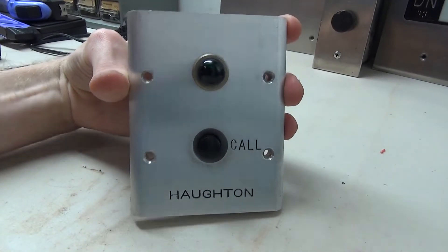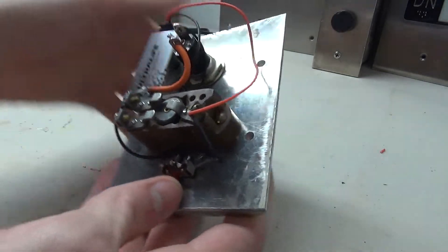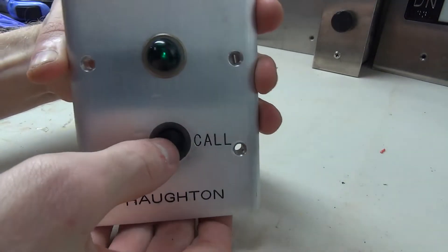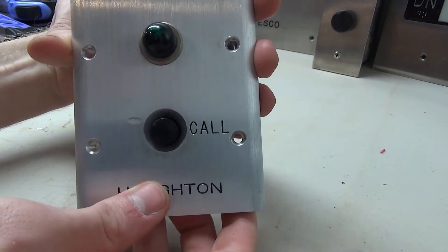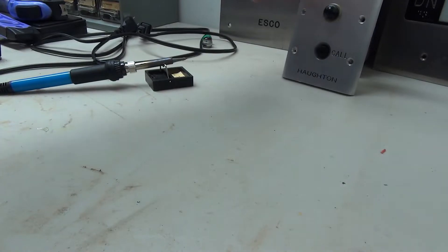All right guys, so there we go. We've added the little switch to the back. We'll see how well the hot glue works, but you can see there, there's the switch. When you press it in, it lights up, and when you slide the switch, it also lights up.